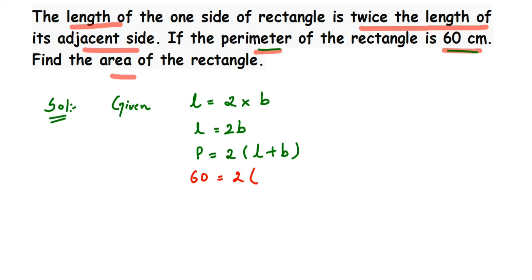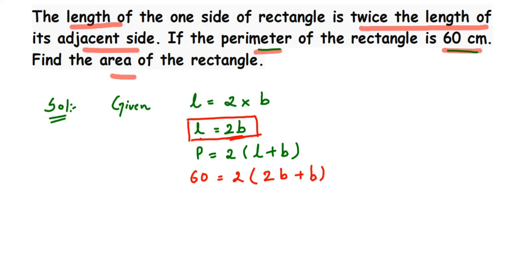In place of length, I substitute 2B — because L = 2B — so it becomes 2 × (2B + B). I am not changing the breadth. I am using the relation L = 2B and substituting it into the perimeter formula. Now we have a linear equation in one variable, B.